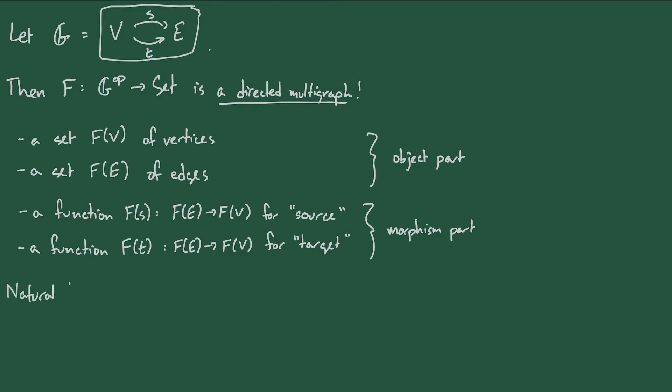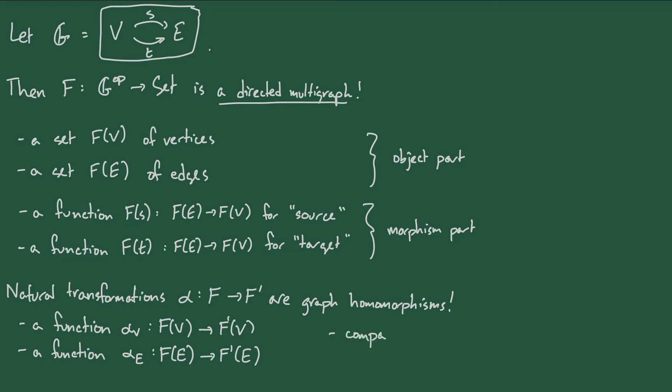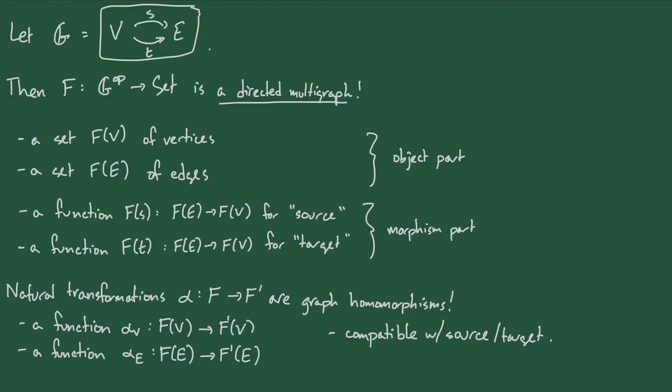Now in category theory, there's also a notion of a natural transformation between two functors. So we can ask, if we have two presheaves on G, if we have two graphs, F and F prime, then what is a natural transformation, alpha, from F to F prime? Well, the data of such a natural transformation is a function from F(V) to F'(V) and a function from F(E) to F'(E) that, moreover, are compatible in a particular way. These are the naturality squares. And those say that if you look at the image of an edge and then take the source or target, that's going to give you the same result as if you take the source or the target first and then you look at the image of the resulting vertex.